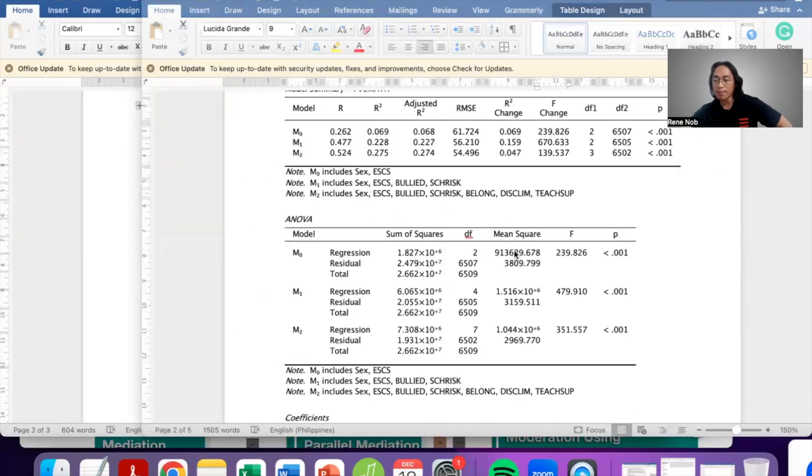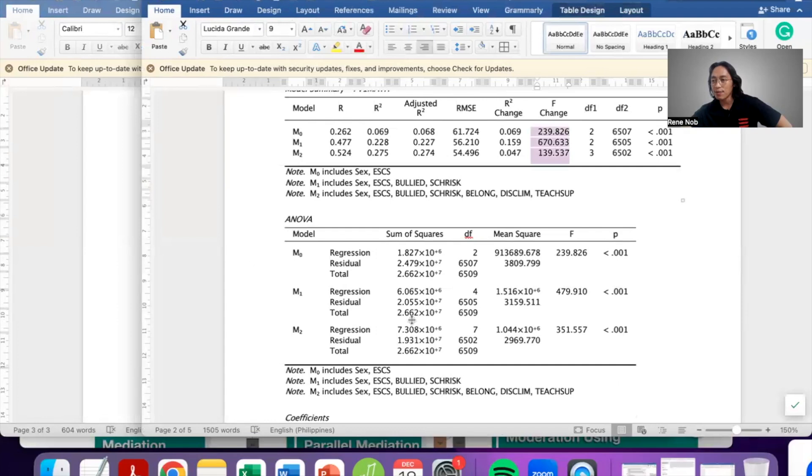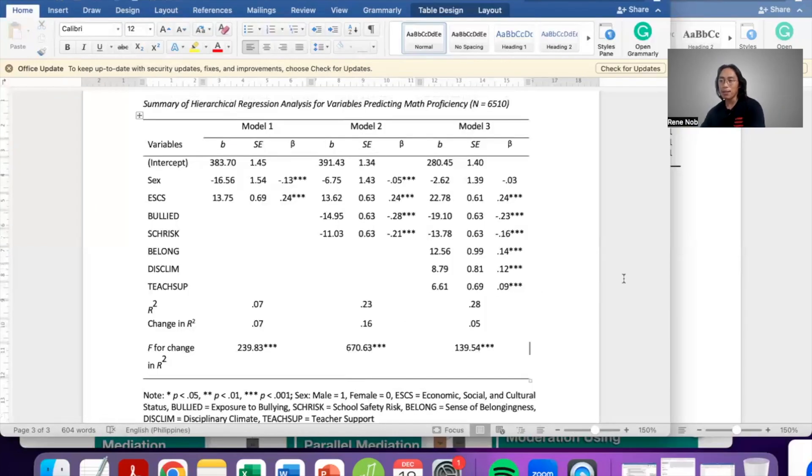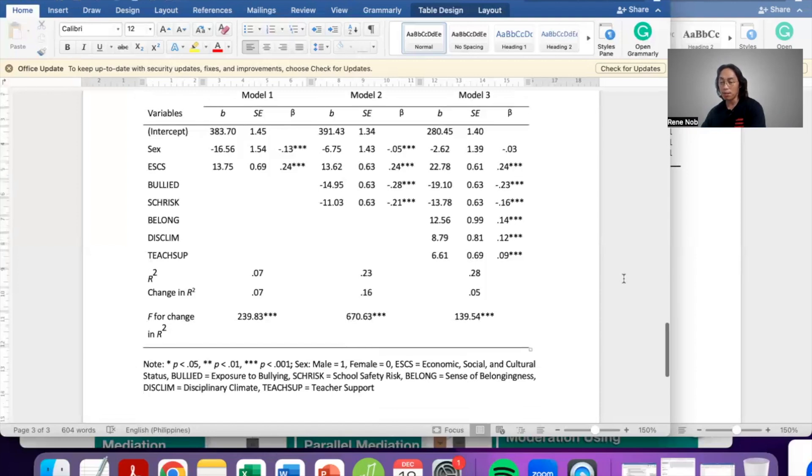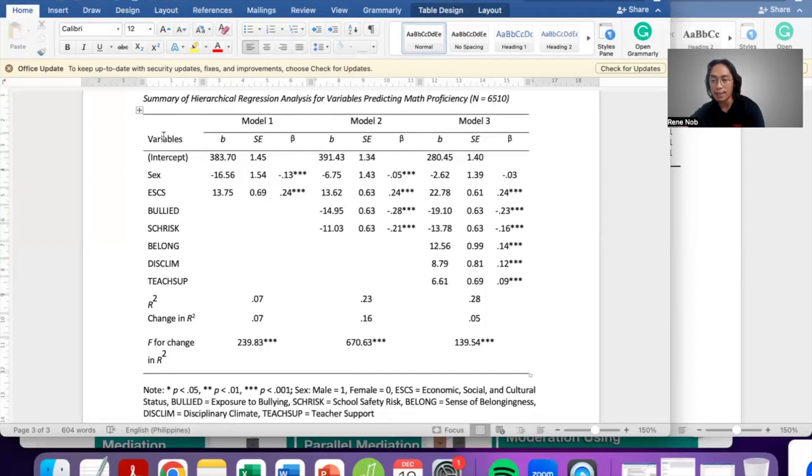So that's how you prepare a simplified APA formatted table for hierarchical multiple regression. Again, the headings must be centered, not boldface. Some of them are italicized, particularly statistical notations that are non-Greek. The values are all centered, but the information on the first column is justified left. You will notice that there is no standardized coefficient for the intercept because there is no standardized regression coefficient for the intercept. The intercept is basically the value of the outcome variable, in this case, mathematics proficiency, assuming that all of these variables are zero.